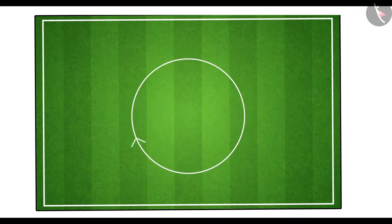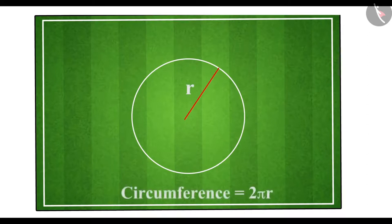Now let's derive the speed of the athlete on a circular path. As we know, the circumference of a circular path with radius r can be calculated by the formula: circumference is equal to 2πr.